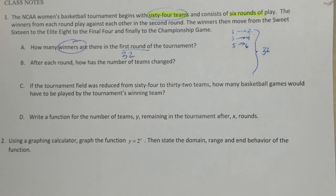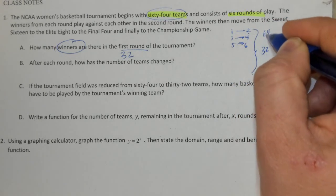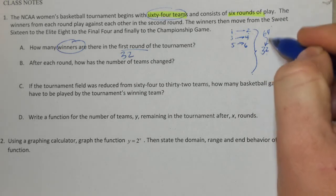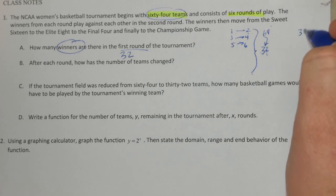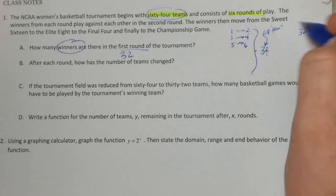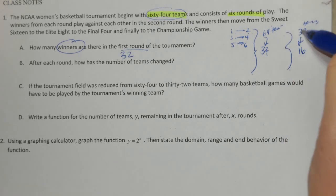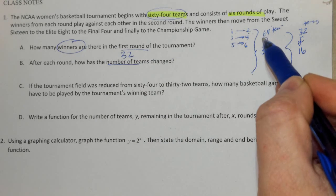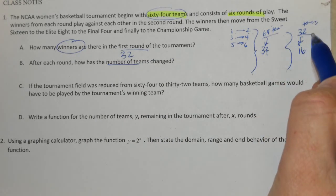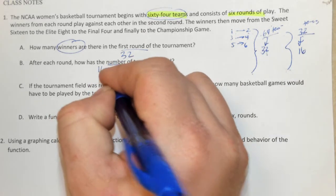After each round, how has the number of teams changed? In the second round, instead of having 64 teams and 32 games, now we're going to have 32 teams and only 16 games, because each game consists of 2 teams. We went from 64 teams down to 32 after the first round, because half the teams lost — we divide by 2. Half the number of teams exist.